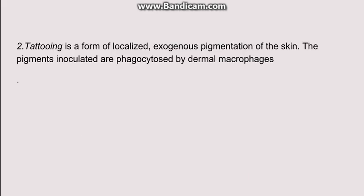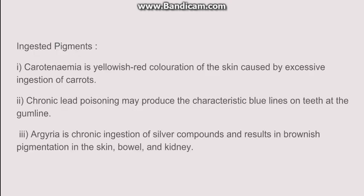Another exogenous pigment is tattooing — a form of localized exogenous pigmentation of the skin where the pigments are phagocytosed by the dermal macrophages. Another route of exogenous pigment is through ingestion, including carotenemia, a yellowish-red coloration of the skin caused by excessive ingestion of carrots. In chronic lead poisoning there is a characteristic blue line at the gums, and argyria is chronic ingestion of silver compounds leading to brownish pigmentation in the skin, bowel, and kidneys.